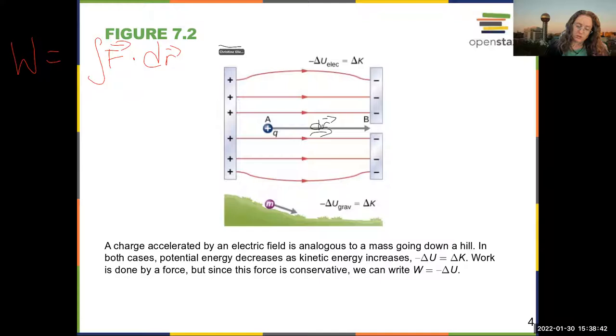So the force is given by Q times E, and then the distance traveled, D. Now, this is in the case that the field is constant.